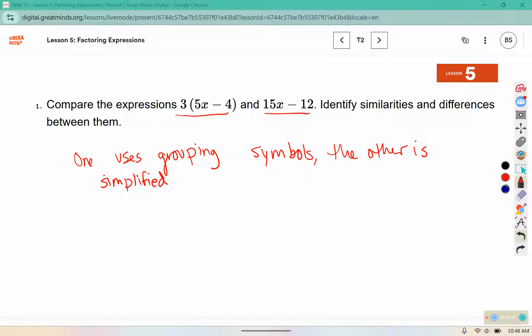Something that is the same or similar about them is if we were to distribute, 3 times 5 is 15, and 3 times 4 is 12, so they are equivalent.